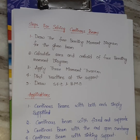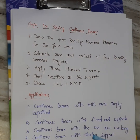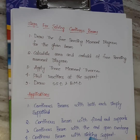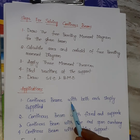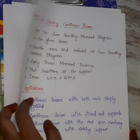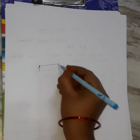First of all, in the previous video, we discussed continuous beams. What are continuous beams? We use Clapeyron's theorem and we calculate the reactions, shear force, and bending moment diagram. Clapeyron's theorem is applied to continuous beams — continuous beams with both ends simply supported — which means beams with more than two supports.